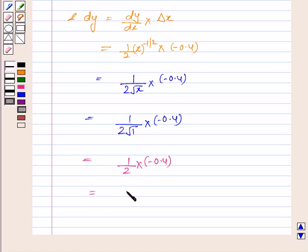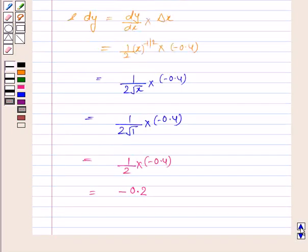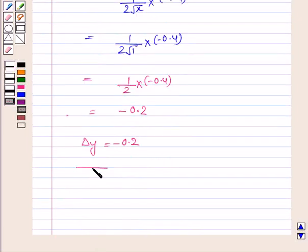And this is equal to minus 0.2. Now delta y is minus 0.2. So under the root 0.6 is equal to delta y plus 1, that is minus 0.2 plus 1.